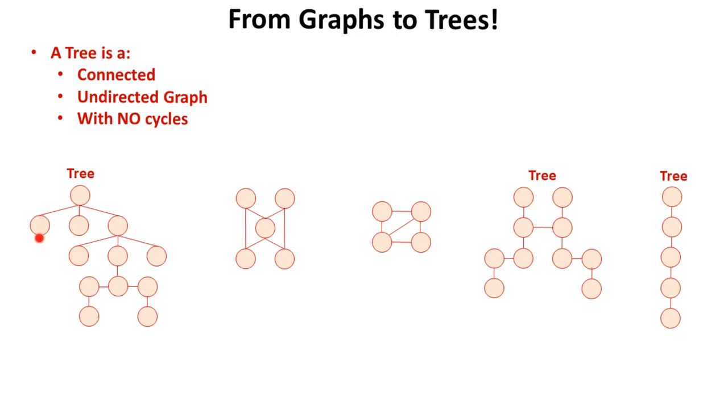So there's no point within this graph where I can loop back around. I have to follow a single traversal path down from one node to another.